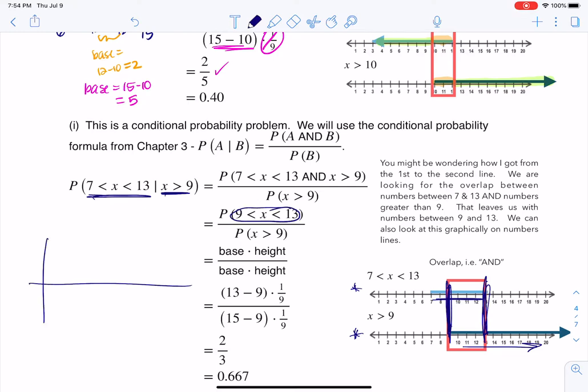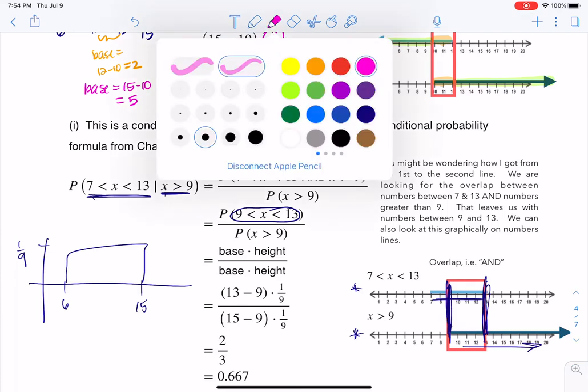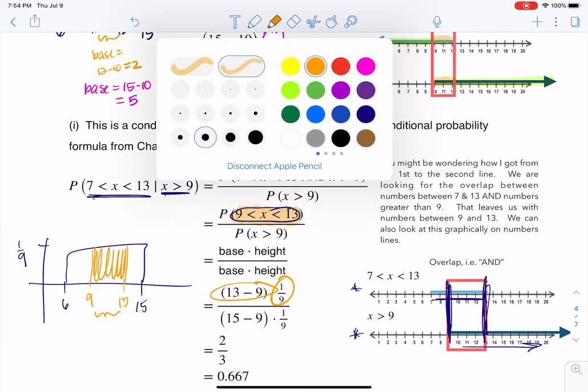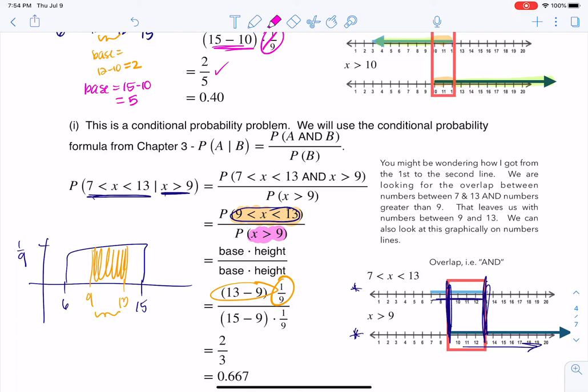And then if I'm looking at this again, if I think about, well, here's my PDF from 6 to 15, my height is 1 ninth, and I want to go 9 to 13. So if I want to go 9 to 13, we're going to look at that area under the curve. Well, that base is 13 minus 9, the height is 1 ninth. Now let's try the other one, let's do the denominator, I need X greater than 9. So I'm going to go to X being greater than 9, I'm going to go all the way up, so what's my base this time out, this time it's 15 minus 9, and that's what you see here, height is still 1 ninth.